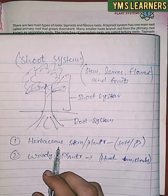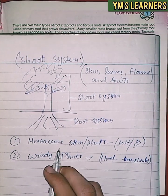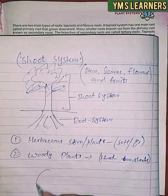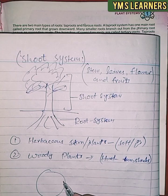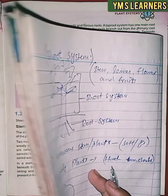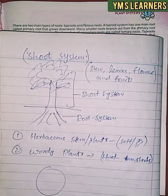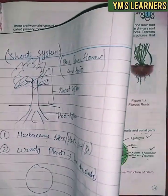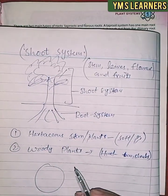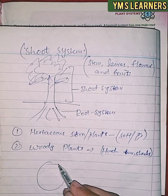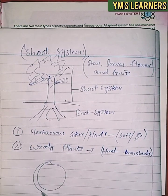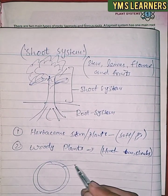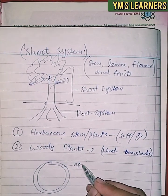This shows the root and internal structure. The stem has an internal structure with layers including the epidermis.